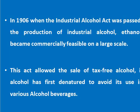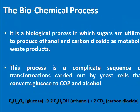In 1906, when the Industrial Alcohol Act was passed, the production of industrial alcohol, that is ethanol, became commercially feasible on a large scale. This act allowed the sale of tax-free alcohol if alcohol was first denatured to avoid its use in various alcohol beverages. But as it is a type of microbial product, a biochemical process should be there behind the production of ethanol.